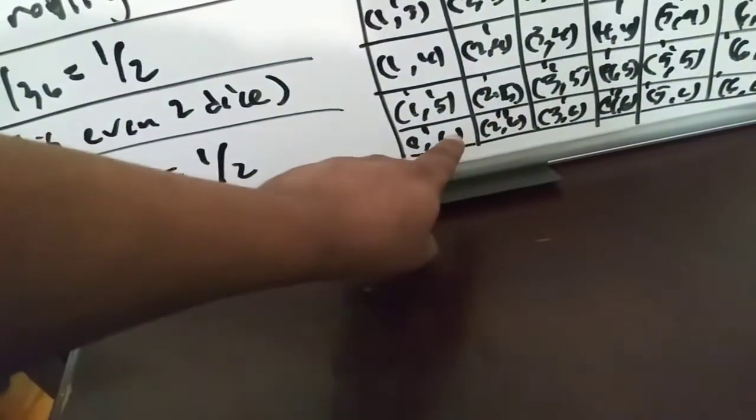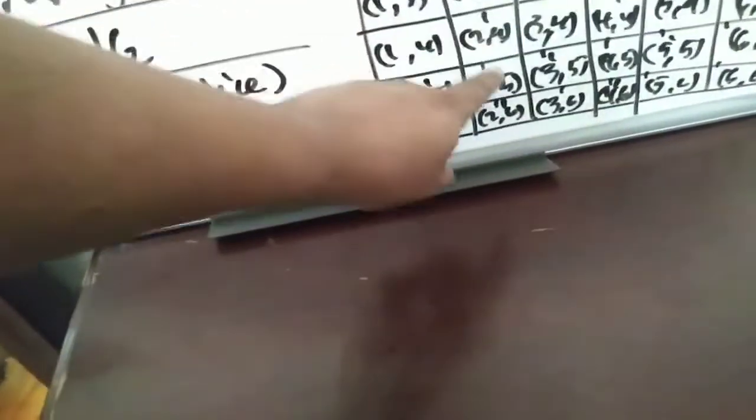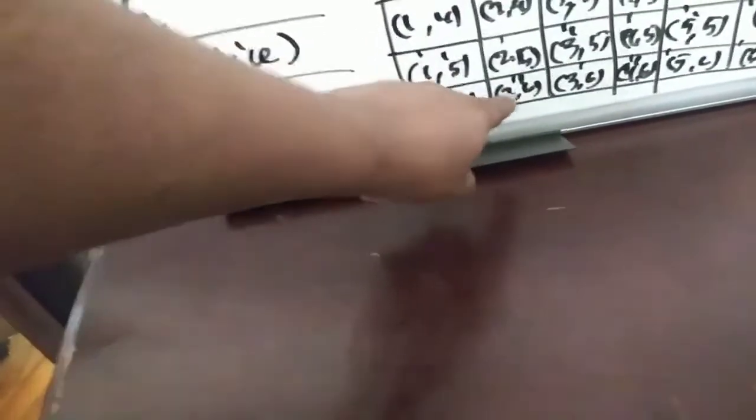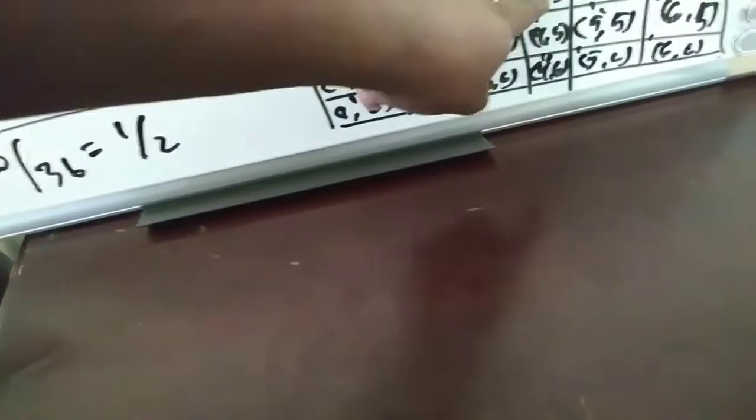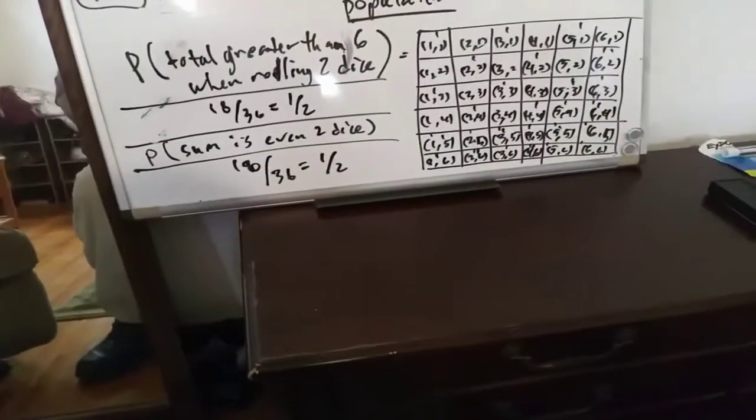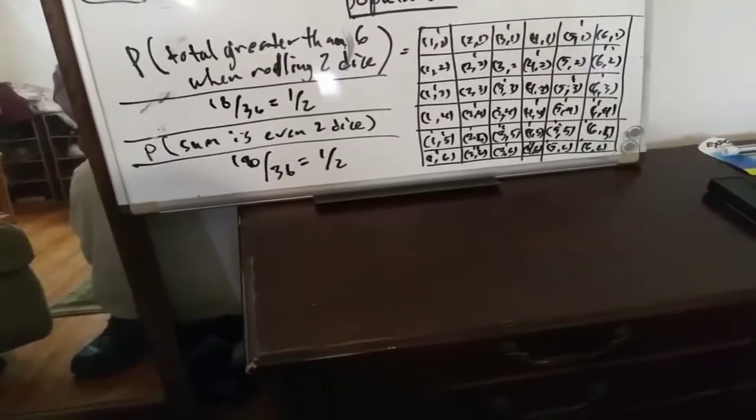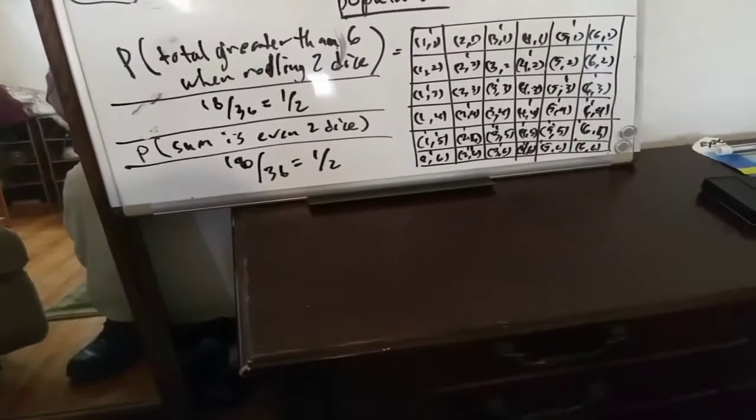So you got one, two, three, one, two, three, four, five, six, seven, eight, nine, 10, 11, 12, 13, 14, 15, 16, 17, 18, 19, 20. Oh man, that's a lot. How did I do that? That's a lot of them, greater than six.